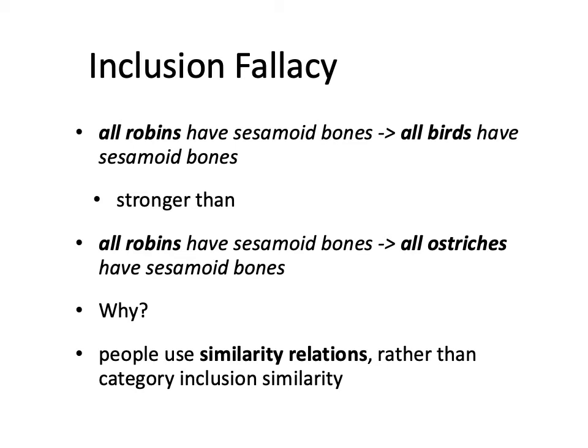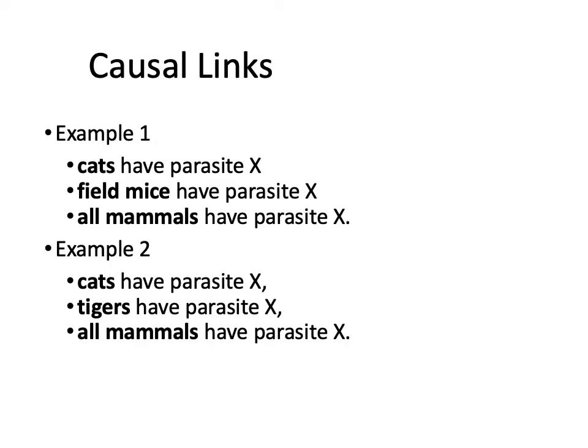There are other things that don't fit this theory perfectly, and that has to do with causality. Causal links between exemplars can undermine effects like similarity, diversity, or inclusion. Look at this example: cats possess parasite X, and field mice possess parasite X, therefore all mammals have parasite X. That's one argument with cats and field mice as the diverse premises.